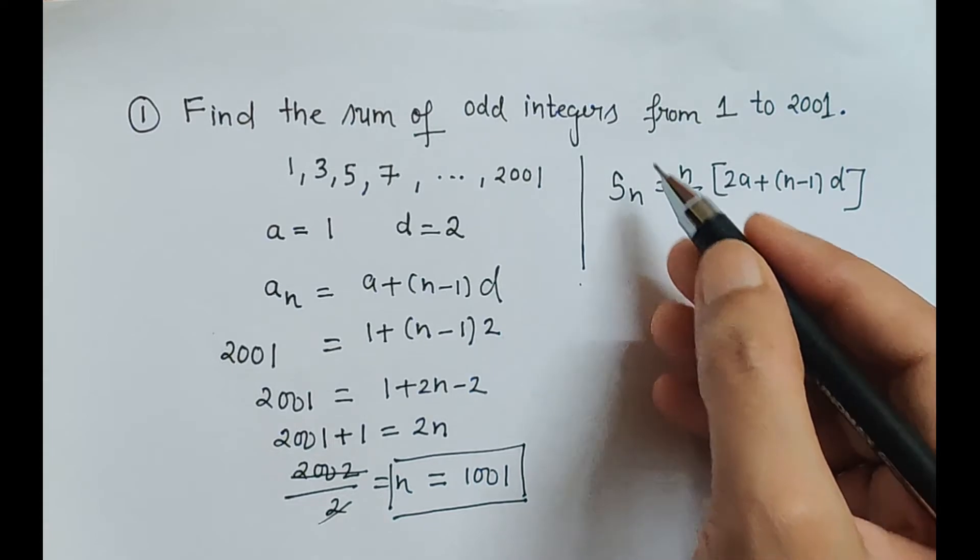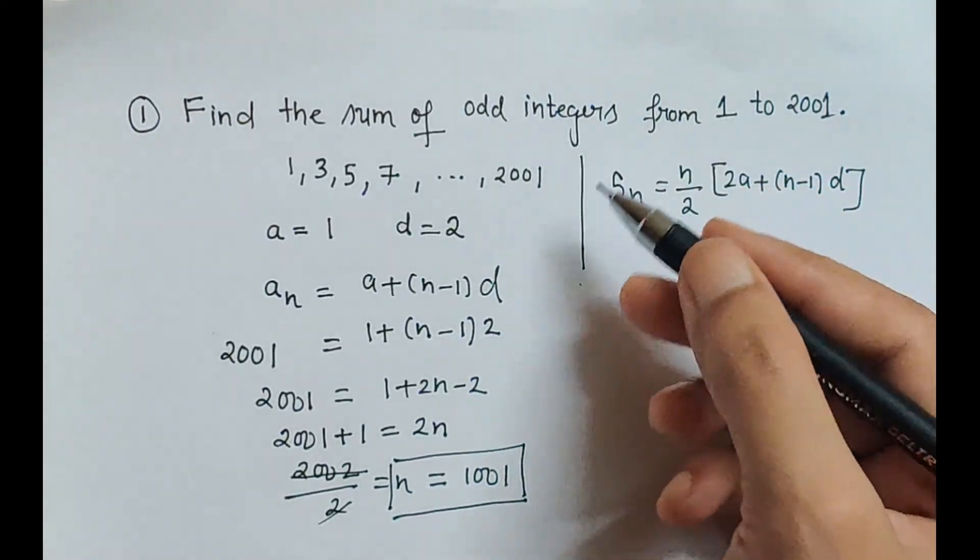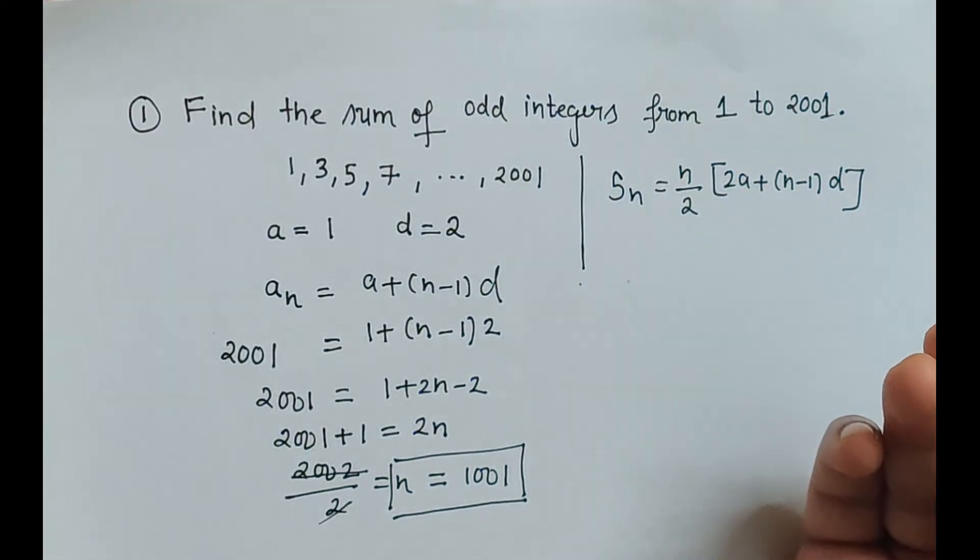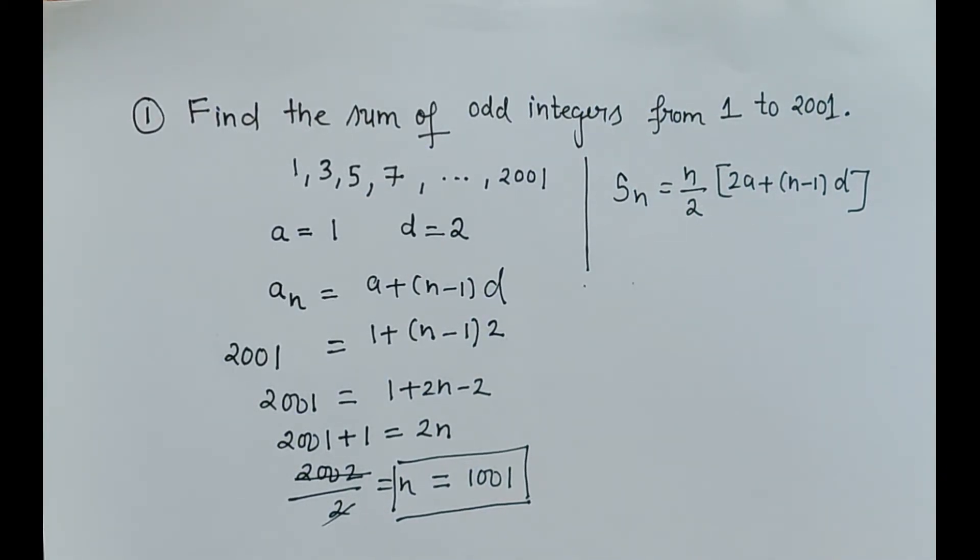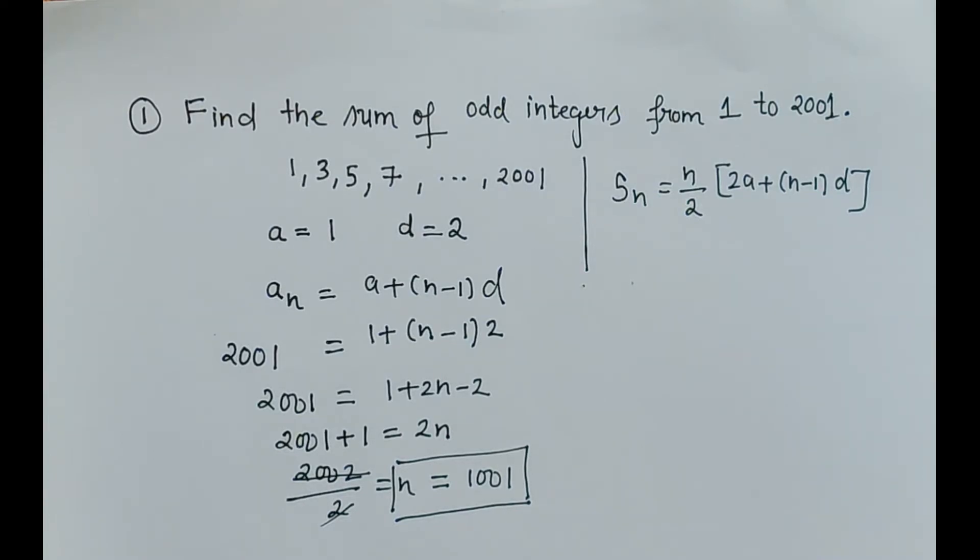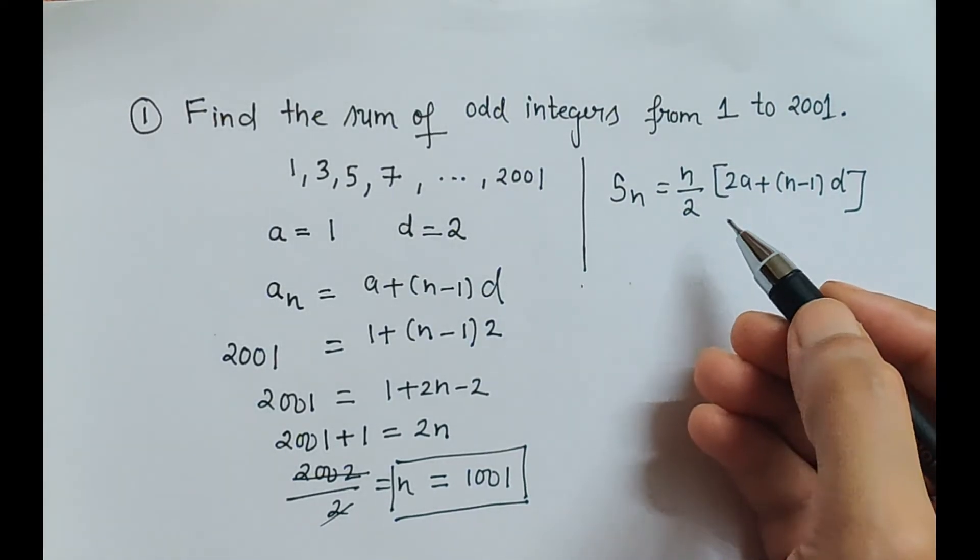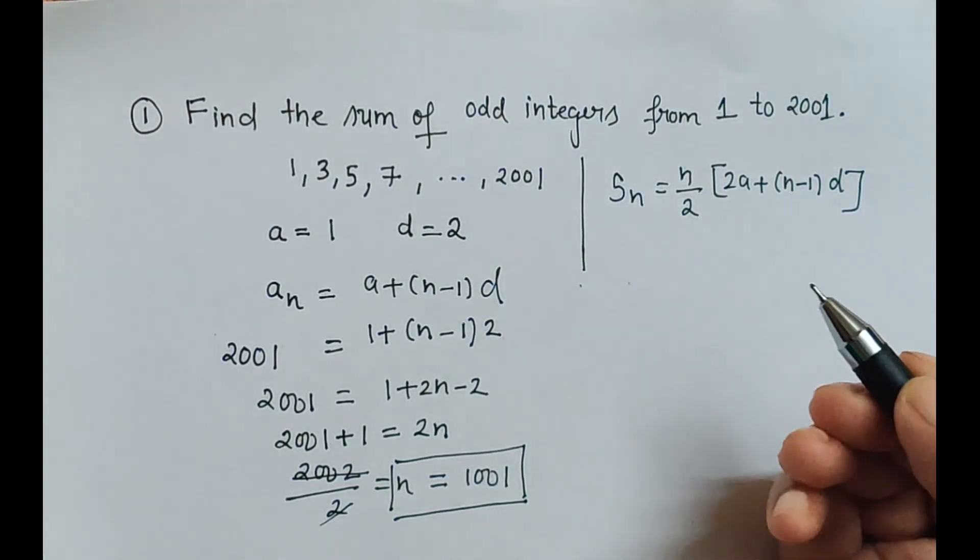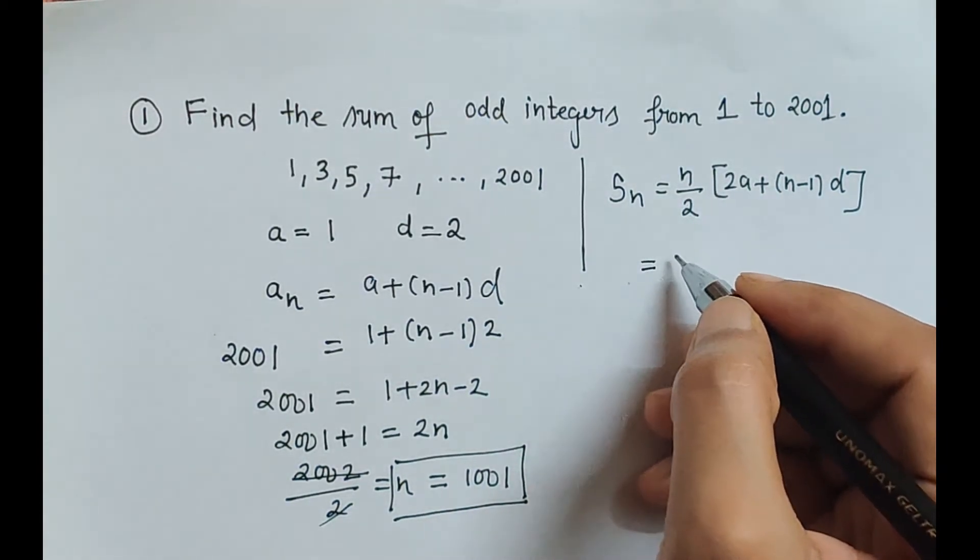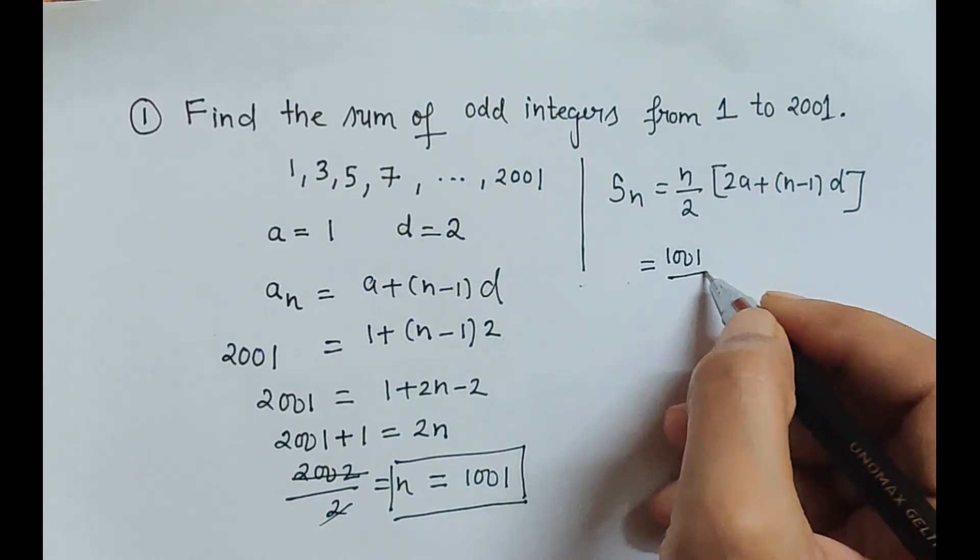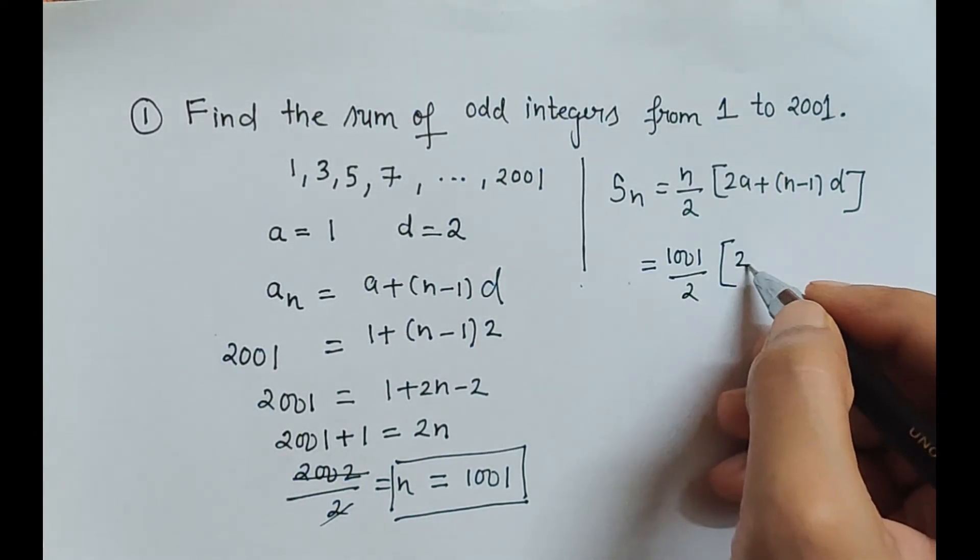So our value of n is 1001. Now we can substitute it here for calculating sum up to n terms, sum up to 1001 terms. Manually it is very very difficult for us to calculate the sum up to 1001 terms, isn't it? So here the thing which is our work is this formula.